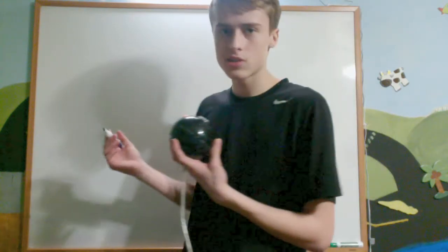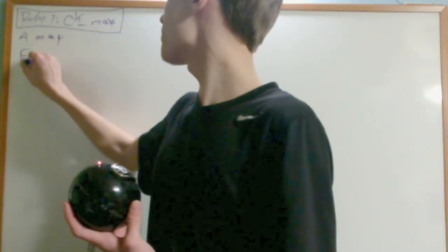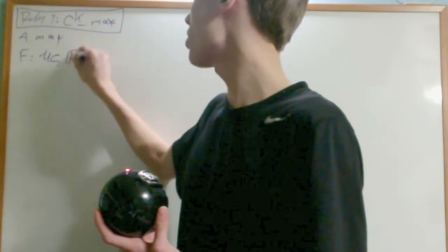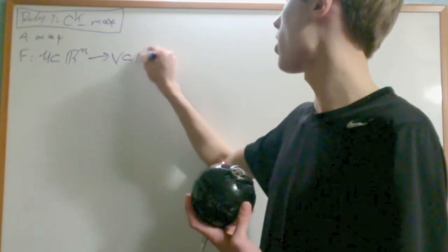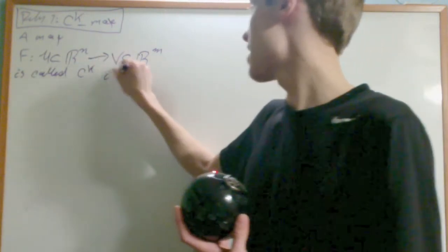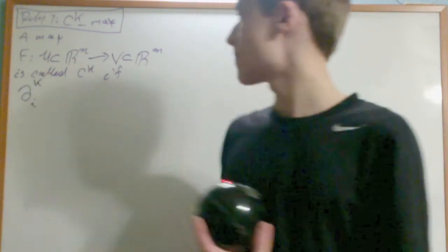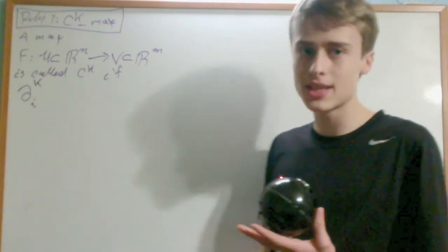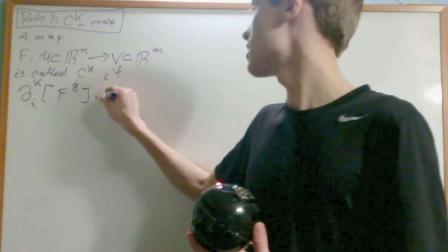Our first definition is going to be of a CK function. We say that a function F from U, an open subset of Rn, into an open subset of Rm is called CK if the kth order partial derivative with respect to the ith component of the jth coordinate function is continuous.